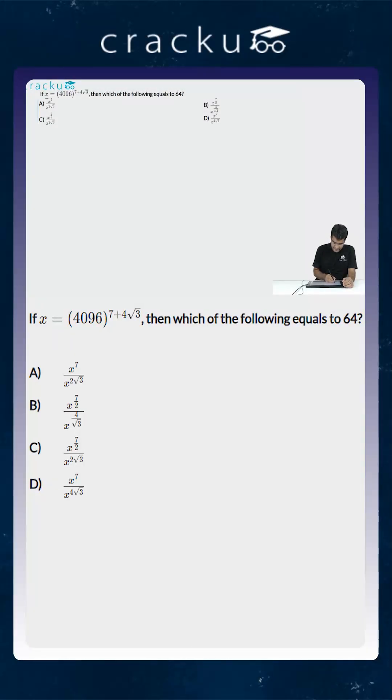In this question we are told that x is equal to 4096 to the power 7 plus 4 square root of 3 and we are asked to find out what is the value of 64. One other thing that you should notice is that 64 square is equal to 4096. So let us try to express x in terms of 4096.